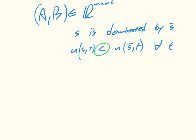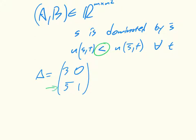As a particular example, if we take the row utility matrix for the Prisoner's Dilemma — a equals [3, 0; 5, 1] — because this is the row player, we're looking at strategies here and here. If we call this strategy s and this strategy s-bar, we indeed see that 5 is strictly bigger than 3 and 1 is strictly bigger than 0.